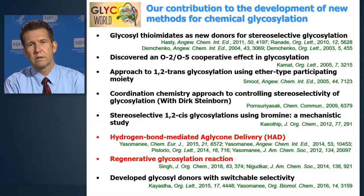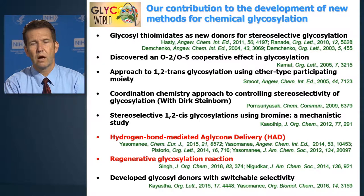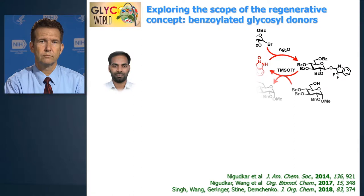This slide summarizes some of our methods that we've been developing throughout the years, and highlighted in red are two methods that I'm going to very briefly introduce to you today. Multiple publication titles are shown on the slide. The first is called Hydrogen Bond Mediated Aglycone Delivery, or HAD. The second is Regenerative Glycosylation Reaction.